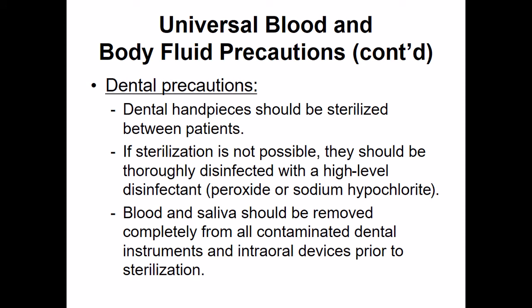When we look at dental precautions, hand pieces should be sterilized between patients. If we can't sterilize, we should have a high level of disinfection — wipe the surface down with sodium hypochlorite, also known as bleach, or a peroxide solution, typically hydrogen peroxide. We should also remove all blood and saliva completely from contaminated dental instruments. We need to make sure to clean everything and sterilize and/or disinfect all surfaces. Just assume everything is highly pathogenic.